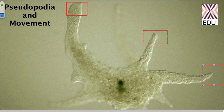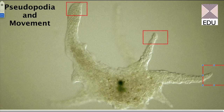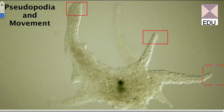Pseudo means false and podium means foot. Pseudopodia are the irregular blunt processes of the cell body of the amoeba. They are variable in size and can be protruded or retracted into the body of the amoeba. Once a pseudopodium is formed in a particular direction, it can be retracted back. A particular type of pseudopodia which are very large and have round tips are called lobopodia. These blunt pseudopodia are also called lobopodia.